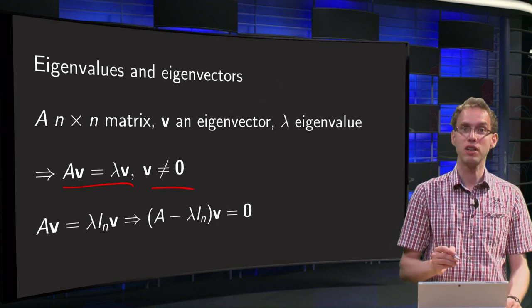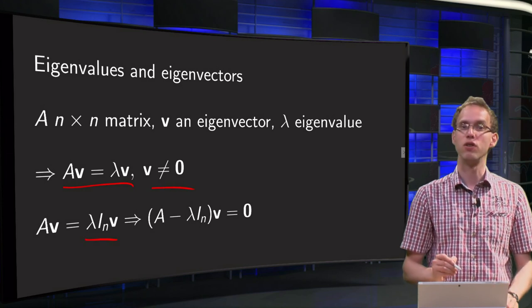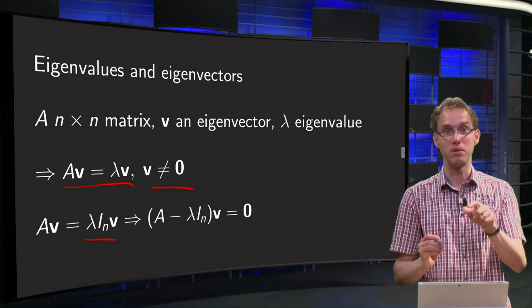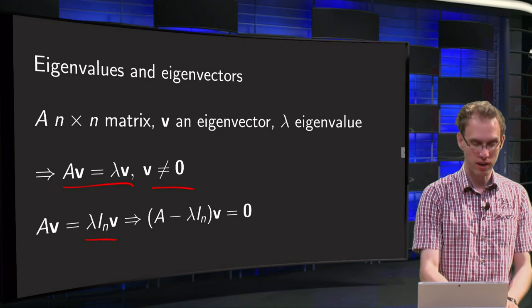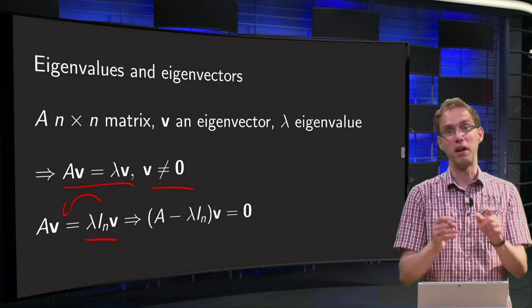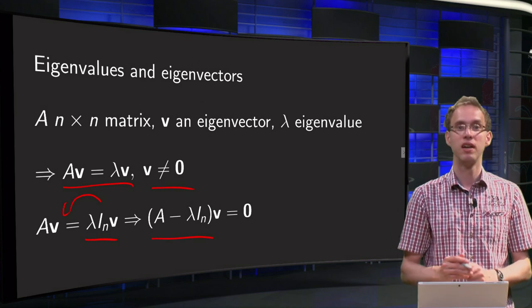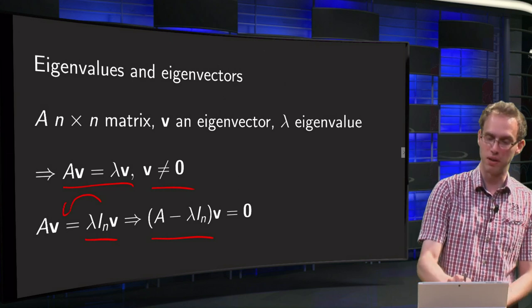Now we do the same trick we do quite often: we insert an identity matrix, so A times V equals lambda times identity matrix times V. We bring this one to the left, so we get A times V minus lambda times identity matrix times V equals zero, and then we factor out the A minus lambda times identity matrix.